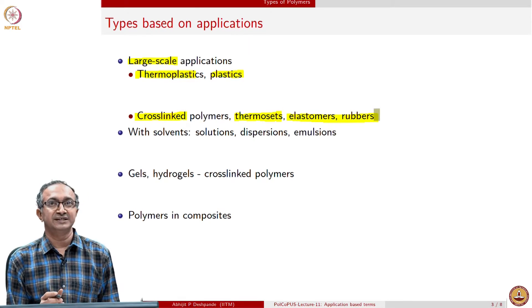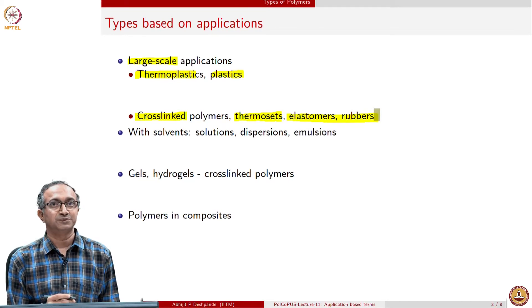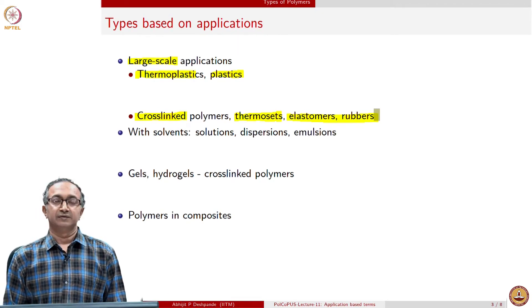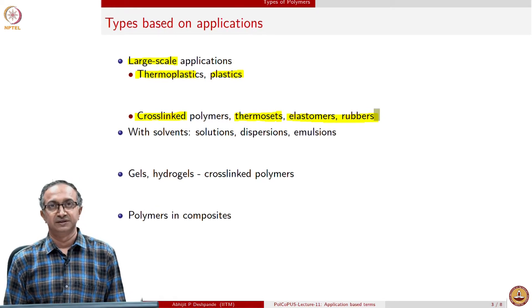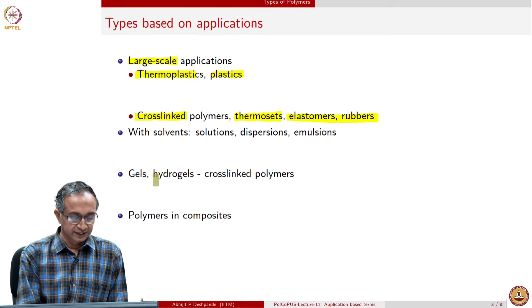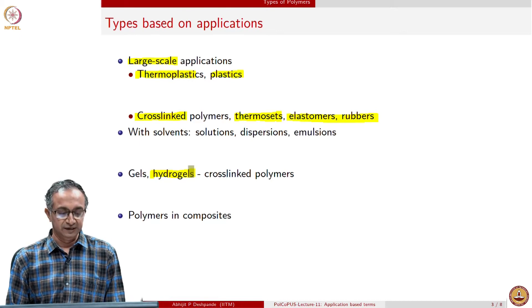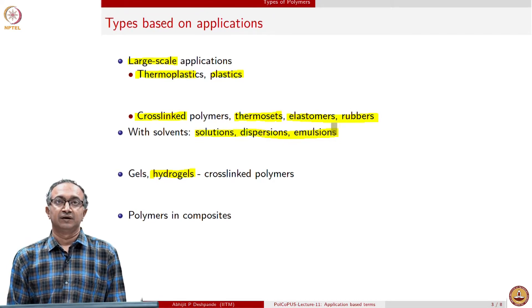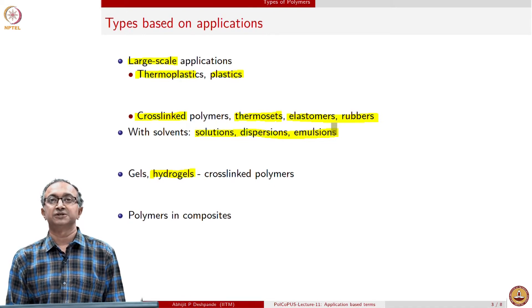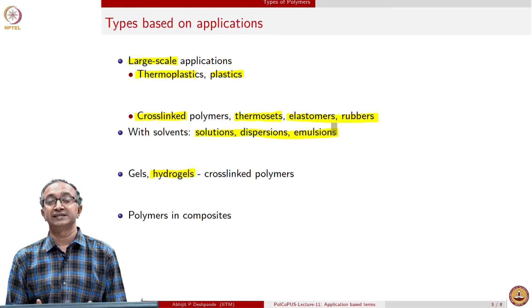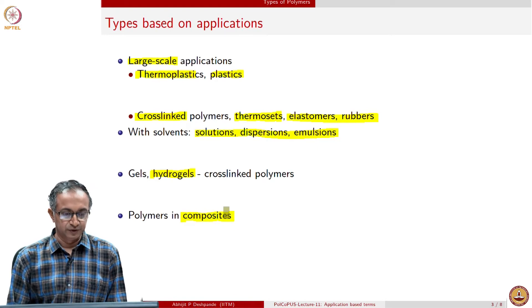Based on degree of cross-linking — high for thermosets and low for rubbers — you can see why rubbers are flexible and softer materials while thermosets are harder and more rigid. Many polymeric systems are used with a solvent. With water, you can have a gel or hydrogel. Polymers can also be in the form of solutions, dispersions, and emulsions. A solution is a molecular mixture between a polymer and a solvent, while a dispersion or emulsion is a two-phase or multi-phase mixture where both polymer and solvent phases retain their phase identities.